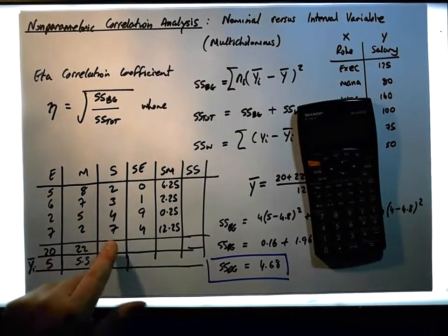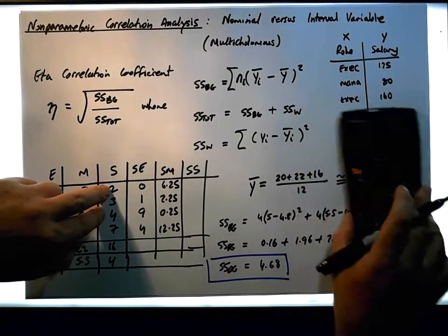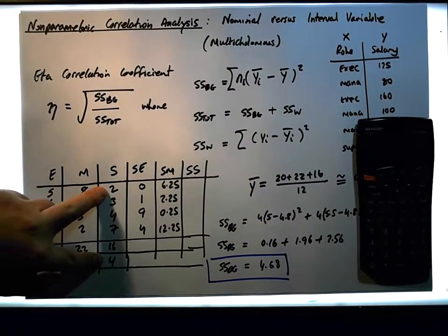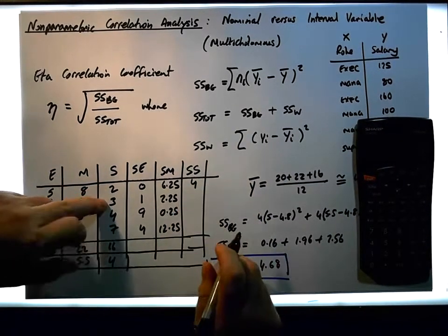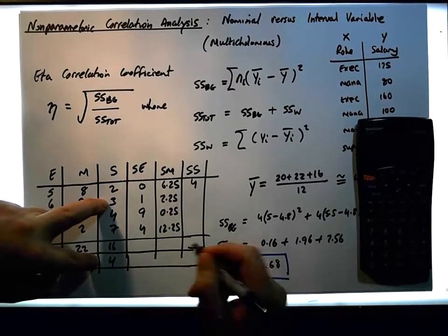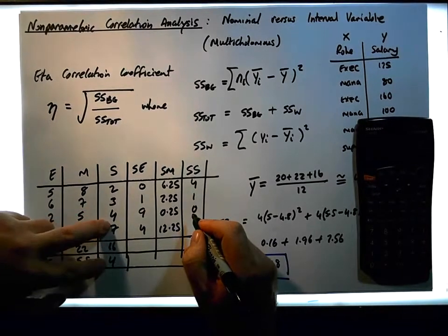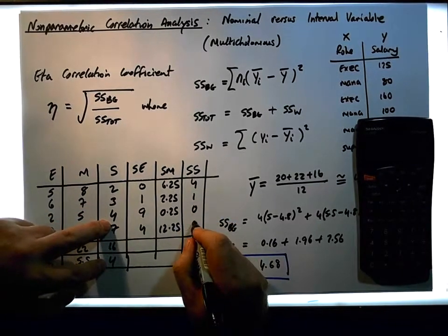Looking at the total group, we're going to calculate each observation minus its mean squared. So for each one of them: 2 minus 4 gives us 2, 2 squared gives us 4, 3 minus 4 gives us minus 1, minus 1 squared gives us 1, 4 minus 4 gives us 0, 0 squared is 0, 7 minus 4 is 3, 3 squared is going to give us 9.